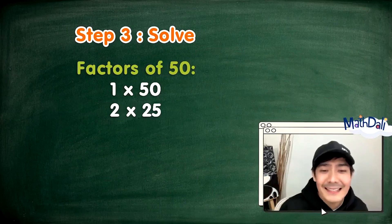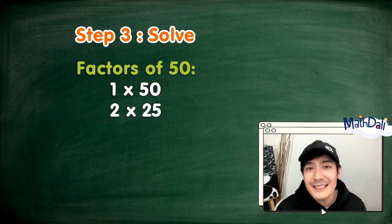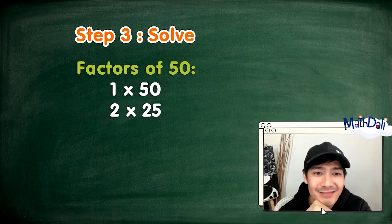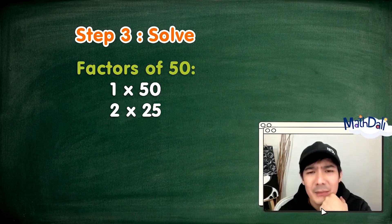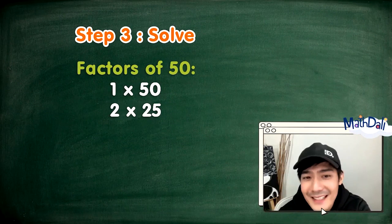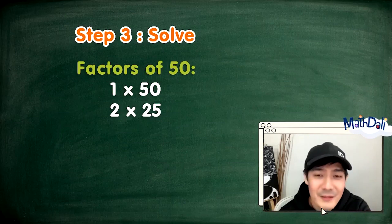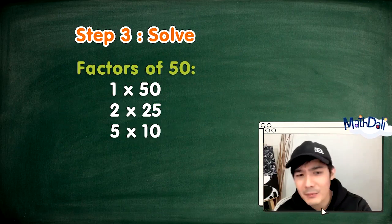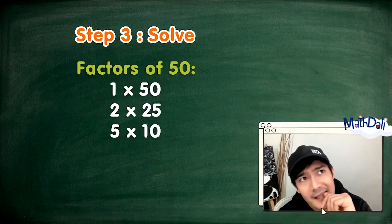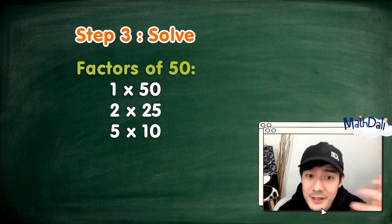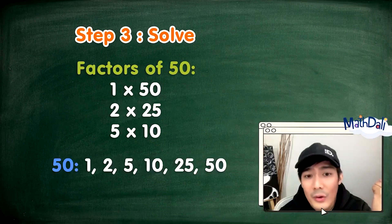Ang 3 ay hindi divisor ng 50 — 50 is not divisible by 3 kasi hindi zero yung remainder natin. How about 4? Divisible ba ang 50 by 4? Hindi rin. Ang 5? Yes, dahil ang 50 ay nag-e-end sa 0, making it divisible by 5. At ang katapat nitong factor to get 50 is 10. So ang factors ng 50 ay 1, 2, 5, 10, 25, and 50.